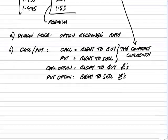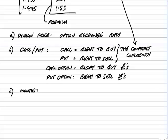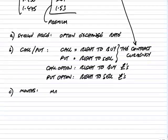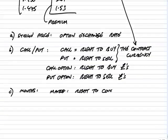Under each of call and put, there are various months: March, April, and May. The month at the top of each column is when the right applies. So if we choose a March option — let's say a March call option — a March option is the right to convert at the strike price on the last day of March.